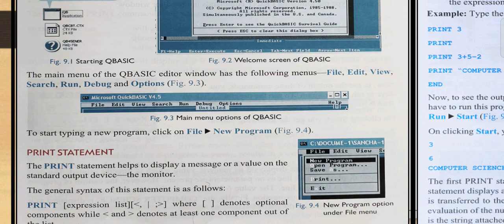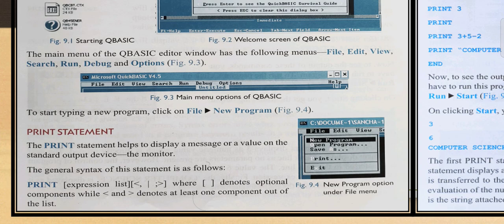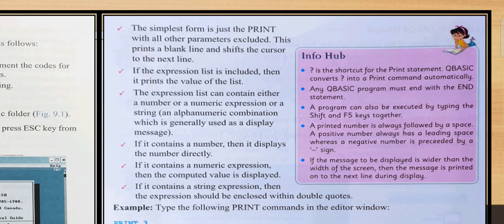Next is PRINT statement. The PRINT statement helps us to display a message or a value on the standard output device, the monitor. We use the PRINT statement to display the output. When we write any program and want to show output, we use the PRINT statement. The general syntax of this statement is: PRINT followed by expression list, where angle brackets denote optional components while less than and greater than denotes at least one component out of the list.